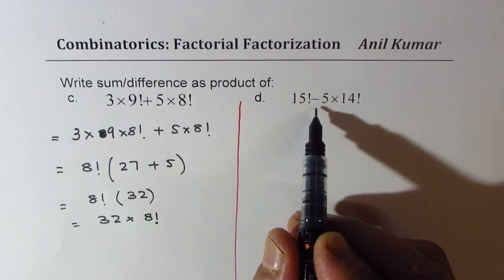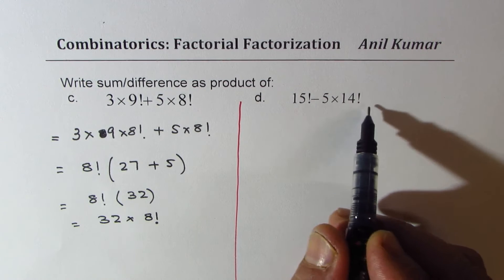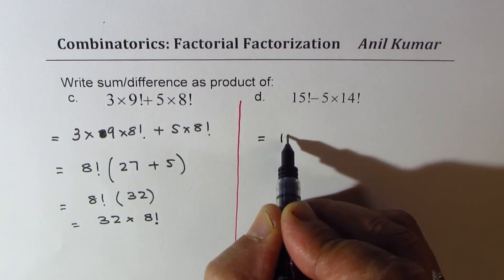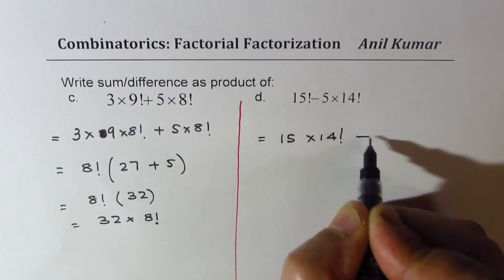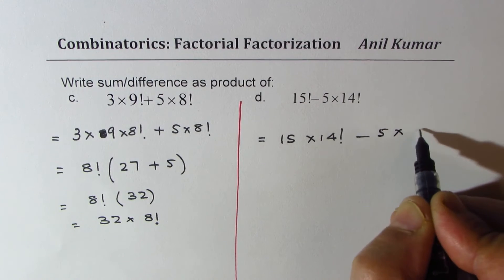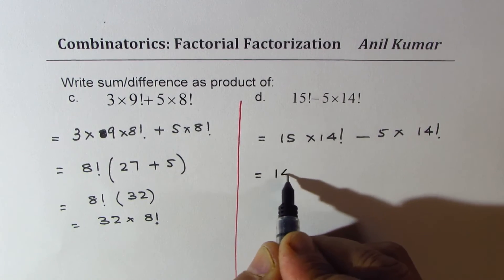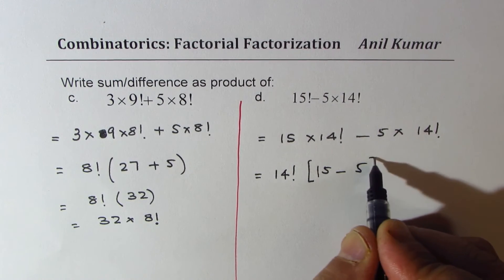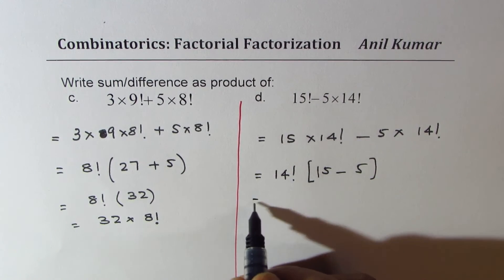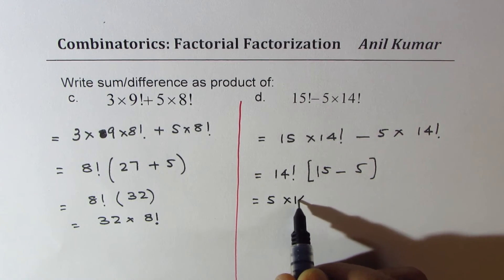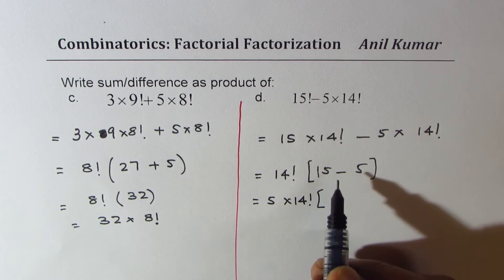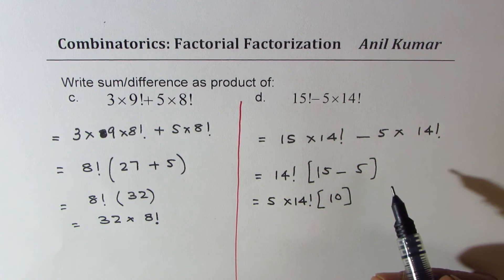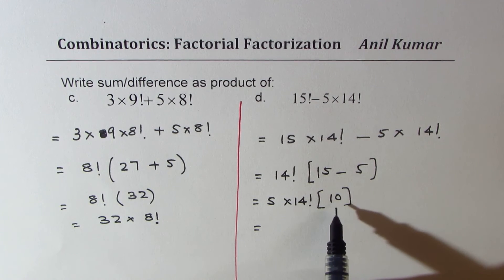Let's do the last one: 15 factorial minus 5 times 14 factorial. Now 15 factorial can be written as 15 times 14 factorial. So we get 15 times 14 factorial minus 5 times 14 factorial. Taking 14 factorial as common, we get 15 minus 5. We could also take 5 as common as well.